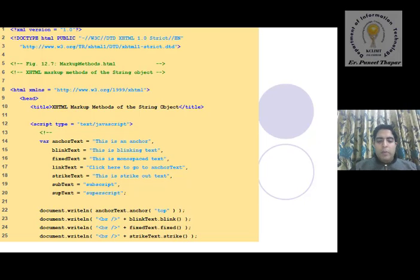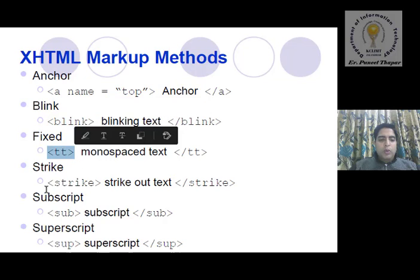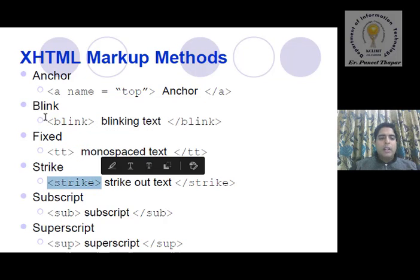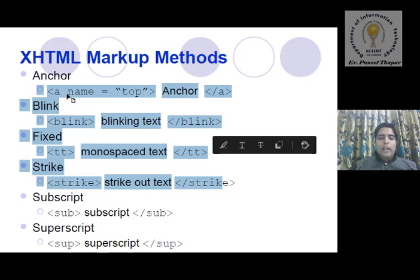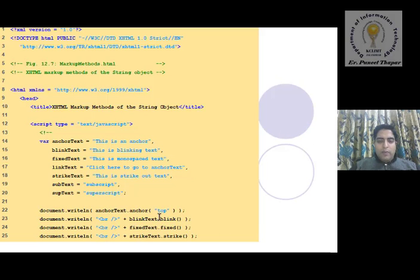Strike is also used for strikeout. To summarize: in plain HTML we use the blink tag, the tt tag for monospace, and the strike tag for strikethrough. But in JavaScript we use the anchor object for anchor, the blink object for blink, the fixed object for monospace, and the strike object for strikethrough — each functionality has its own dedicated JavaScript object.